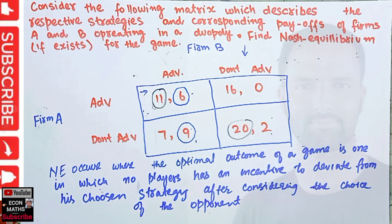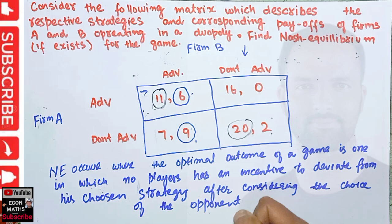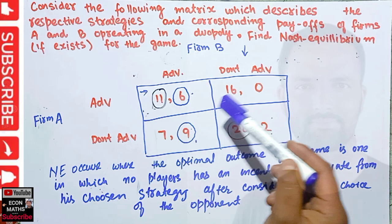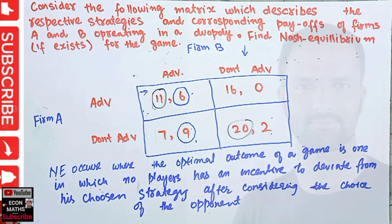This was all about Nash equilibrium. There is more to explore, such as pure strategy Nash equilibrium, mixed strategy Nash equilibrium, and subgame perfect Nash equilibrium. Nash equilibrium for a two-player payoff matrix occurs where both values are encircled after solving for each strategy. I'm just a student of economics, so if there are any mistakes in my video, please point them out — I'd really appreciate it.